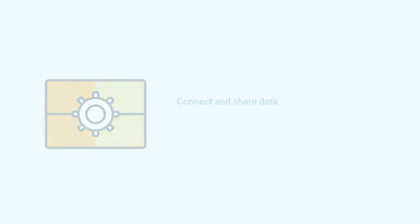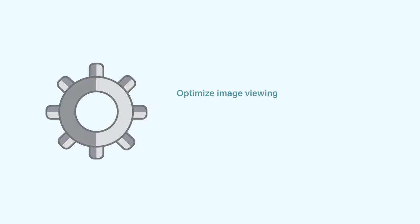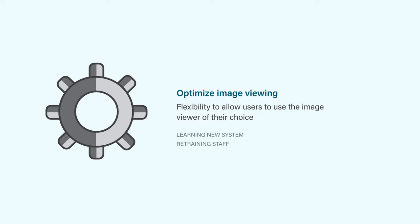Omega AI V&A can connect to any system, making data easily accessible and shareable. Users can manage multiple locations within their enterprise from one screen. Omega AI V&A has the flexibility to allow users to use the image viewer of their choice, which eliminates the need to learn a new system or retrain staff.